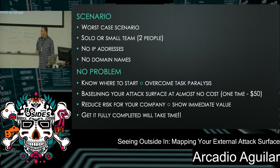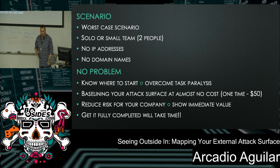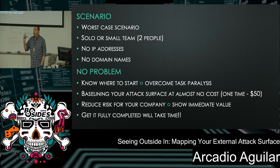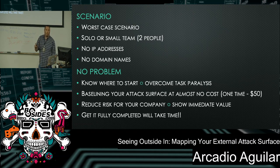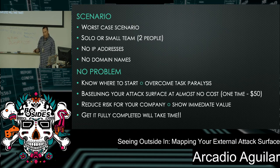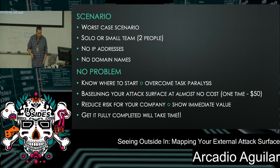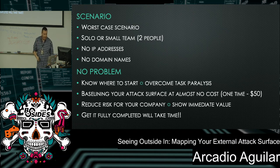Sometimes when I get really large tasks I'm overcome with paralysis — where do I start? So I'll give you a place to start. You're going to baseline your attack surface at almost no cost. All of the tools I'm going to talk about today have a free tier. Shodan — I paid the one-time $50 membership, which is almost unheard of nowadays — not $50 a month, just one time. You're going to reduce risk for your company and show immediate value, but to get a good baseline on a recurring basis it's going to take some time.